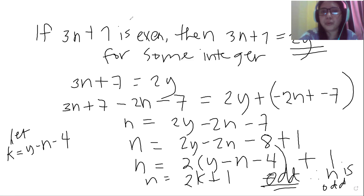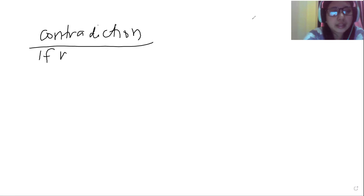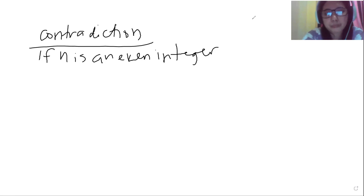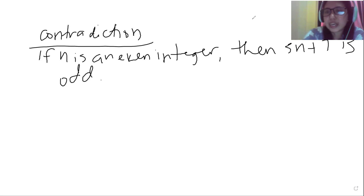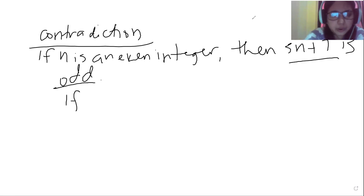Now let us move to another example using the same statement, but this time we are going to use proof by contradiction. We are still dealing with: if N is an even integer, then 3N plus 7 is odd. By contradiction, we are going to assume the opposite — that 3N plus 7 is even.